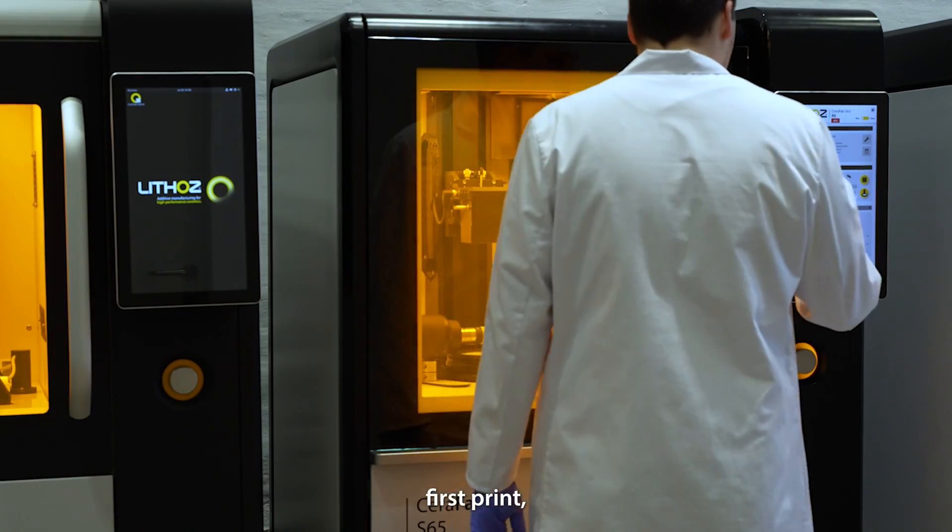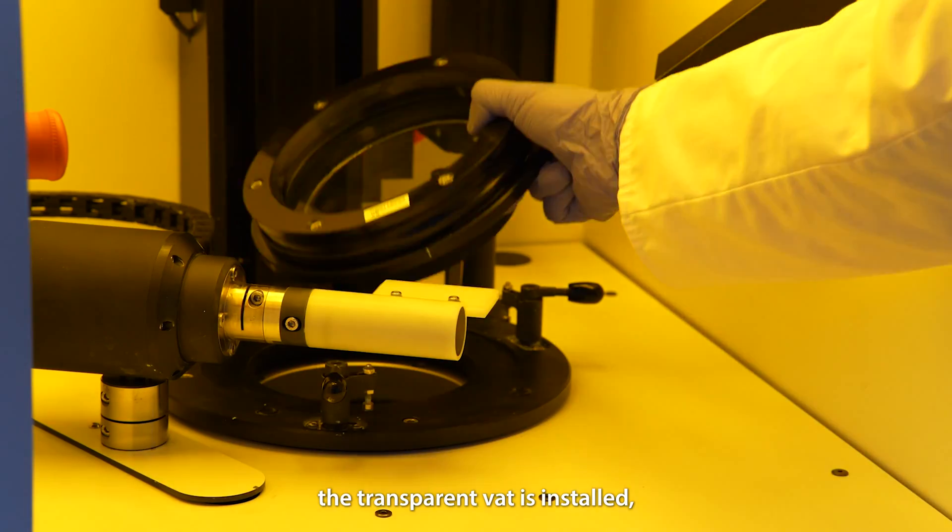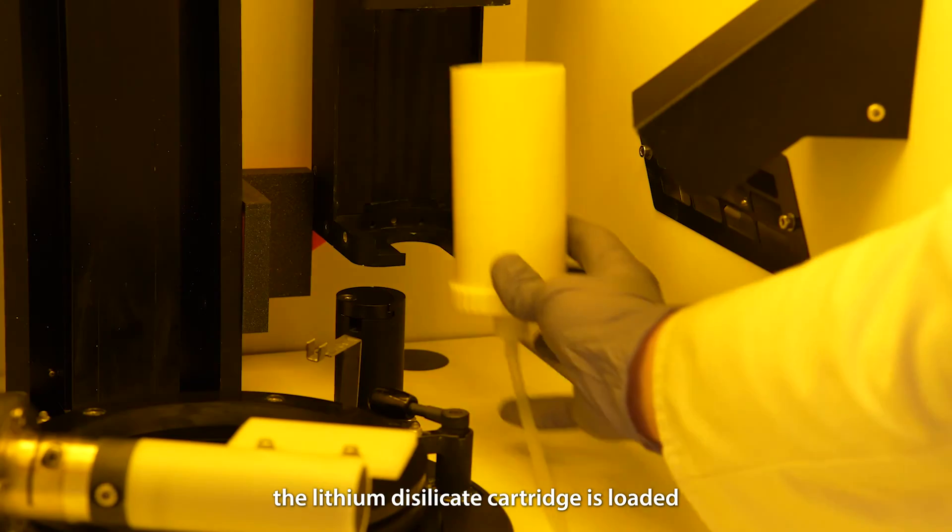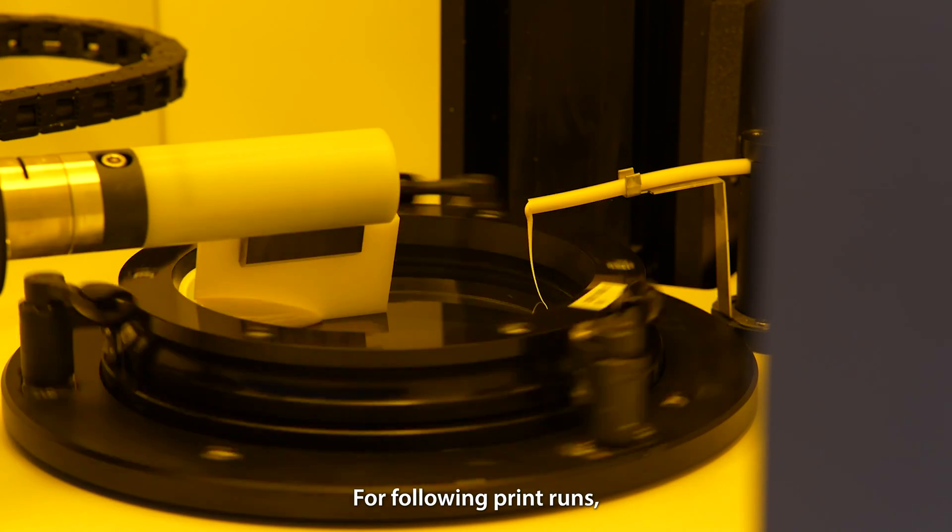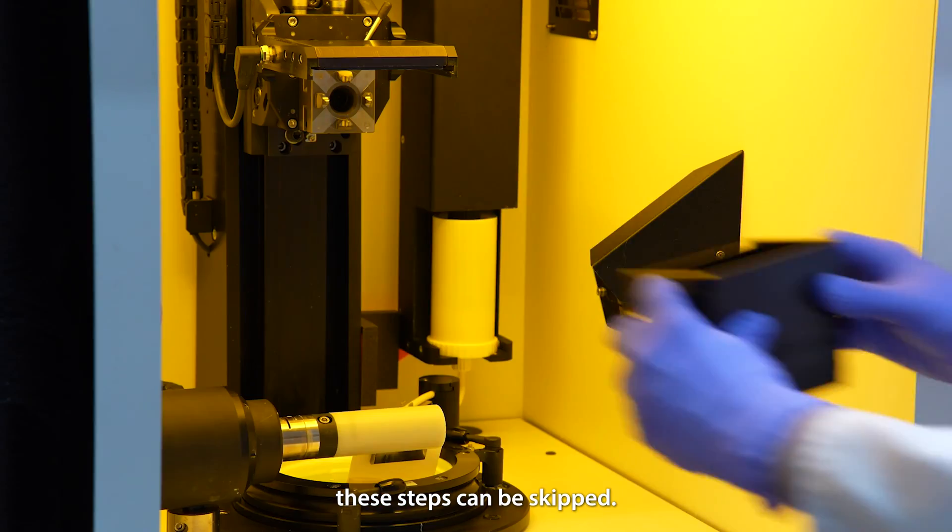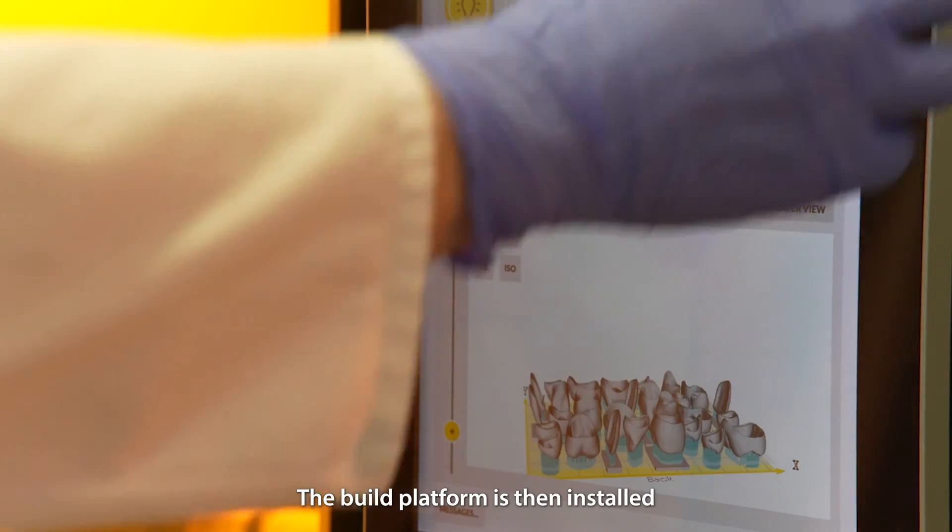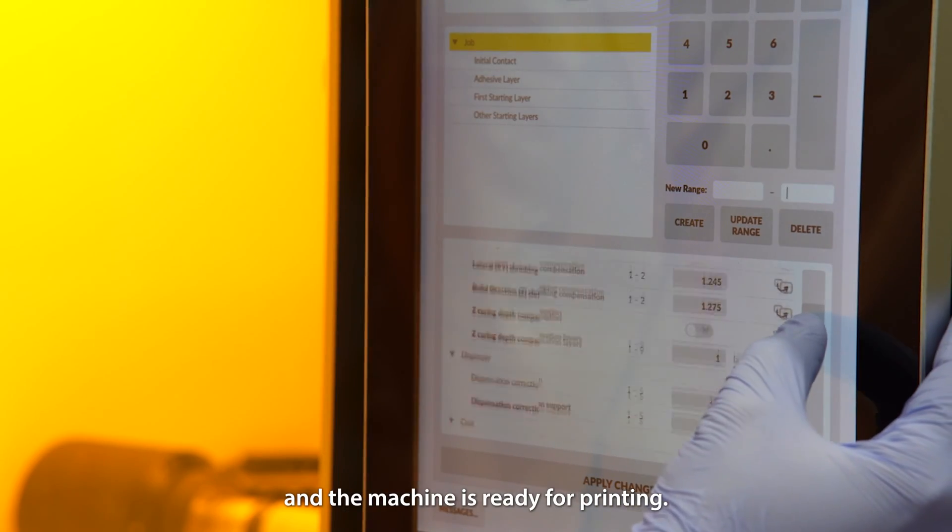To start the first print, the transparent vat is installed, the lithium desilicate cartridge is loaded and a layer of slurry is coated onto the vat. For following print runs these steps can be skipped. The build platform is then installed and the machine is ready for printing.